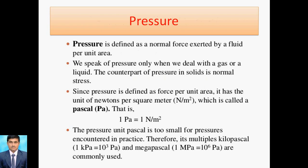Pressure is defined as a normal force exerted by a fluid per unit area — that is, force per unit area. The SI unit of force is Newton and for area is meter square, so the unit of pressure is Newton per meter square, also called Pascal. We write it as Pa. 1 Pa equals 1 Newton per meter square. Since this term is very small, we use multiples: kilopascal (1 kPa = 10³ Pa) and megapascal (1 MPa = 10⁶ Pa).